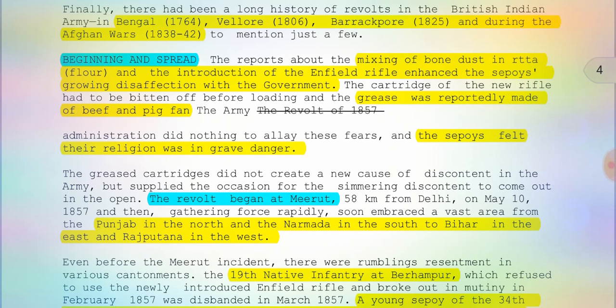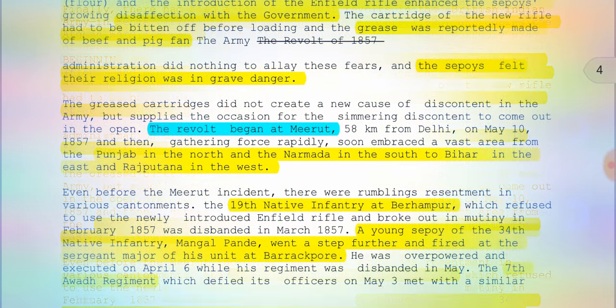The revolt began at Meerut, which is 58 kilometers from Delhi, and spread rapidly to Punjab in the north, Narmada in the south, Bihar in the east, and Rajputana in the west. It was the 19th Native Infantry at Barrackpur which refused to use the newly introduced Enfield rifle and broke out in mutiny in February 1857, and was disbanded in March 1857. Mangal Pande, a young sepoy of the 34th Native Infantry — the character portrayed by Aamir Khan in the movie — went a step further and fired at the sergeant major of his unit at Barrackpur.